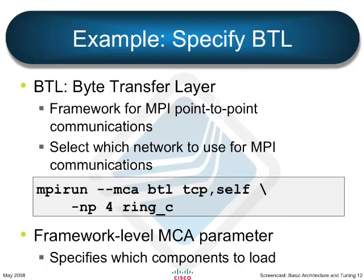Here's one example: specifying the BTL, the Byte Transfer Layer. The BTL is the framework for MPI point-to-point communication — TCP, shared memory, InfiniBand, and so on. What you can do is say which components and plug-ins to use, which effectively tells OpenMPI which networks to use for MPI communication. On the command line: mpirun --mca btl tcp,self — the framework name itself is a tunable parameter, and the value 'tcp,self' says to use two components, TCP and self. This is a framework-level MCA parameter that specifies which components to load at runtime.